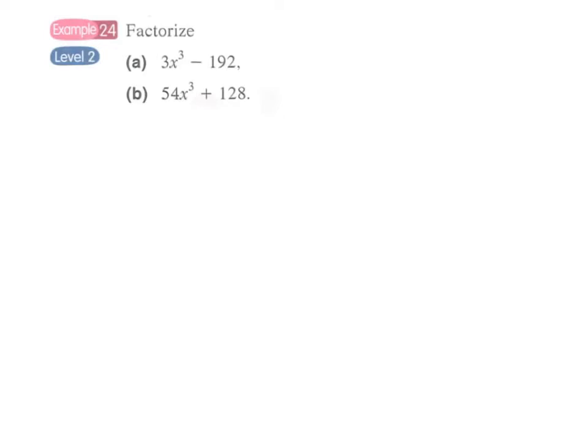Remember, in our previous lesson, in order to make these numbers much smaller, usually we have to apply taking out the common factor in the first place. For example, we can see that these two terms have the common factor of 3, then we can just take out the common factor 3.